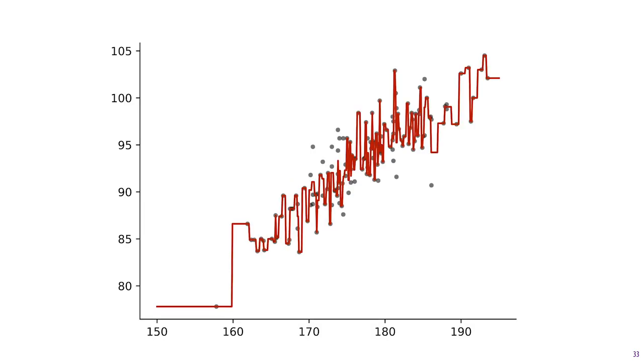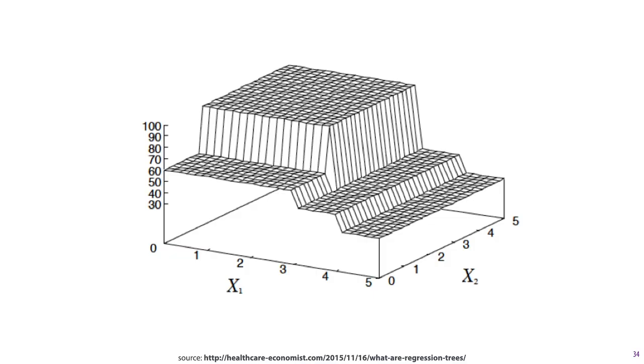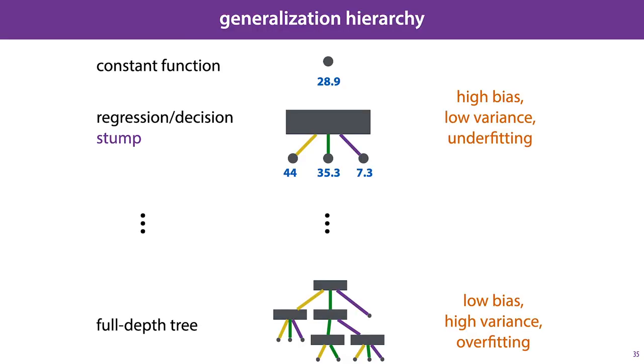We've seen before what a regression tree looks like over a single numerical feature, and we can note two things. Clearly the regression tree splits many times on this one feature, and clearly here too there's a lot of overfitting going on, so some regularization is called for. If you have two numeric features, you can visualize a regression tree in this way.